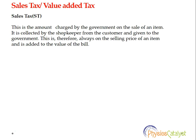Sales tax is the amount charged by the government on the sale of an item. It is collected by the shopkeeper from the customer and given to the government. It is therefore always on the selling price of the item and is added to the value of the bill. So if you purchase a TV or anything from the market, your bill will include the sales tax.